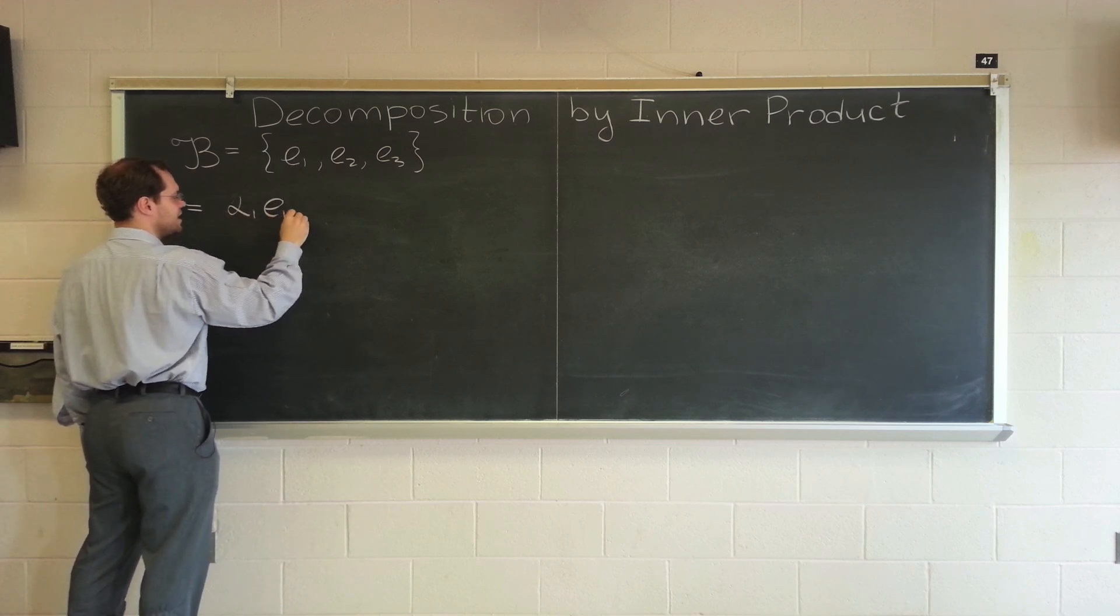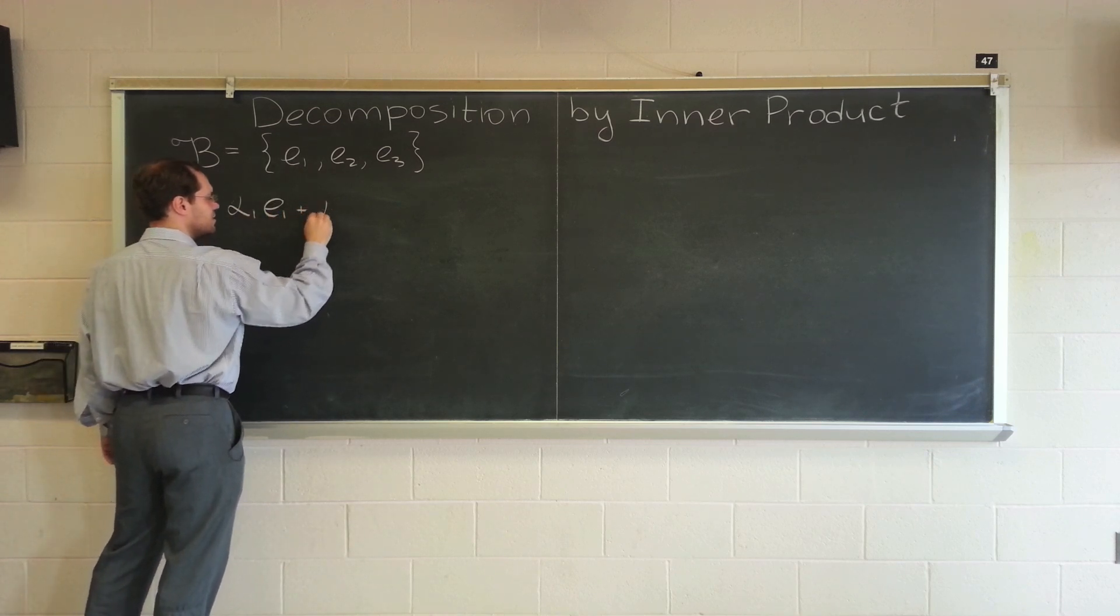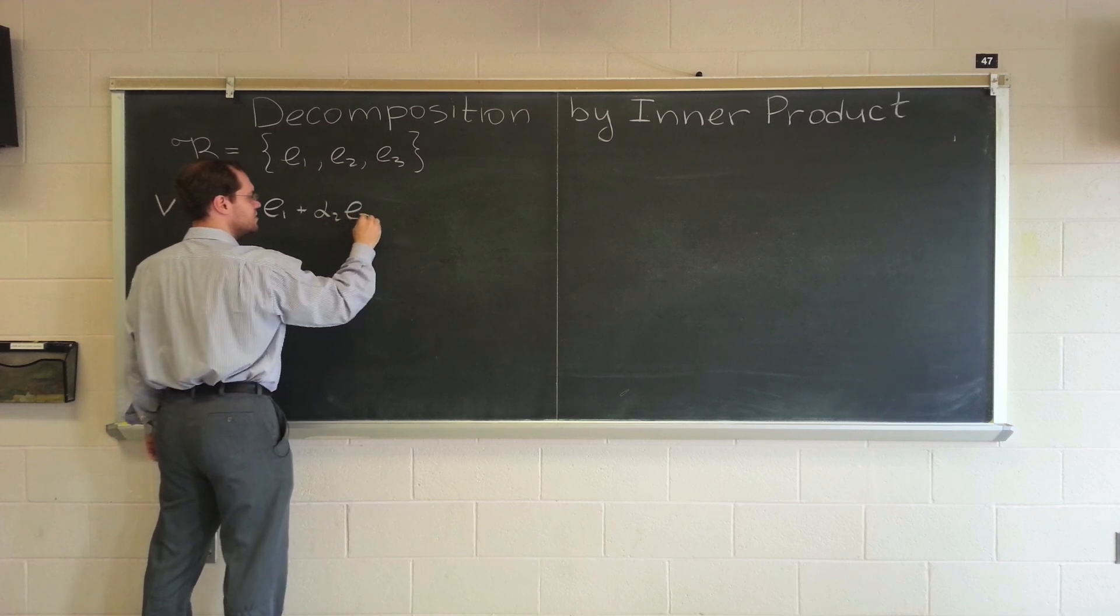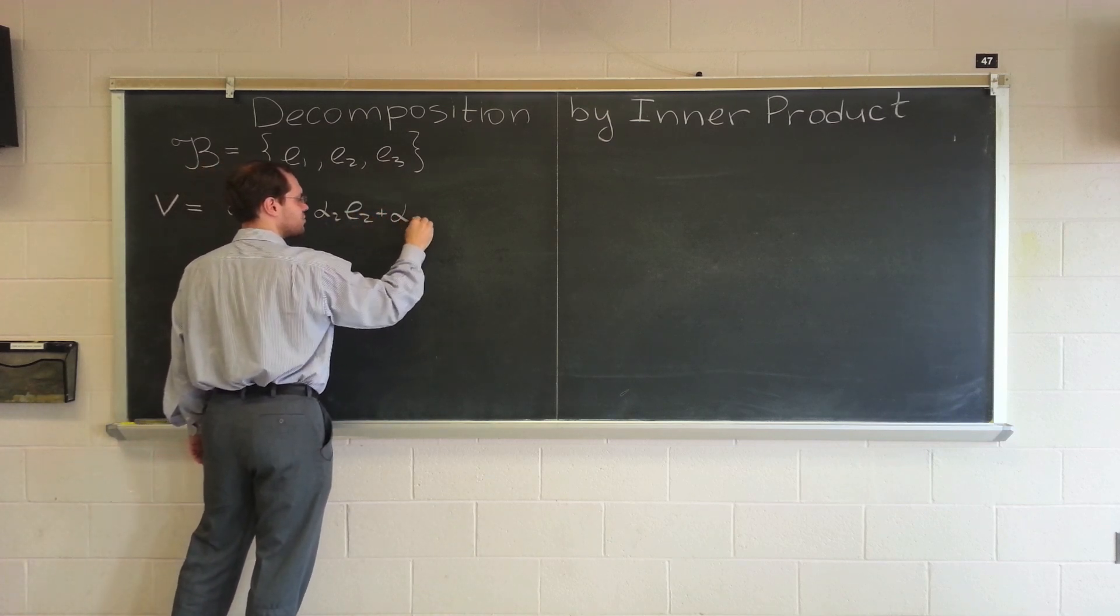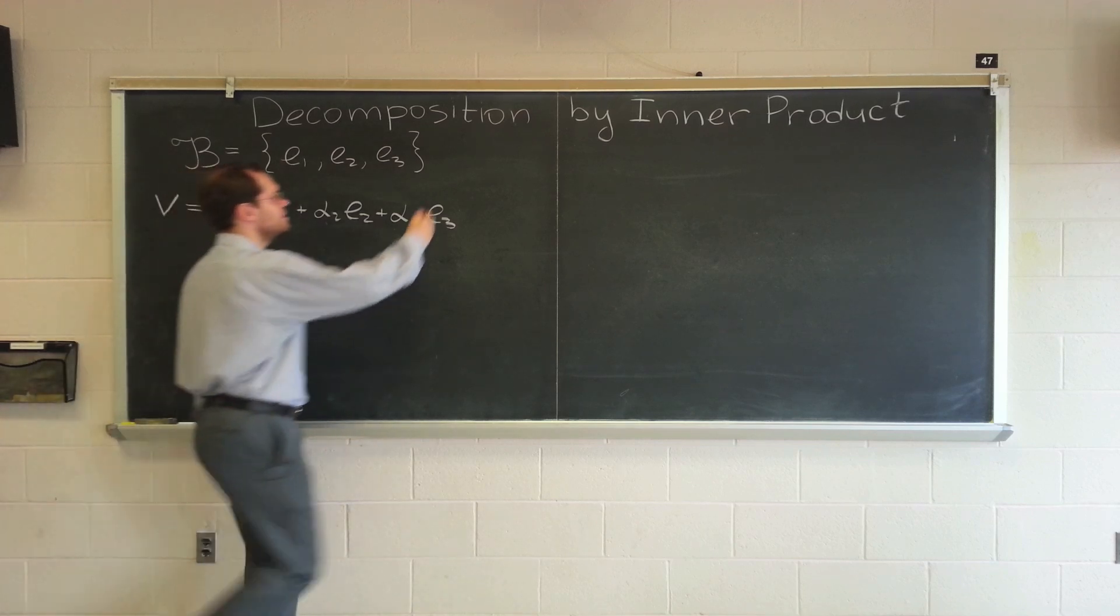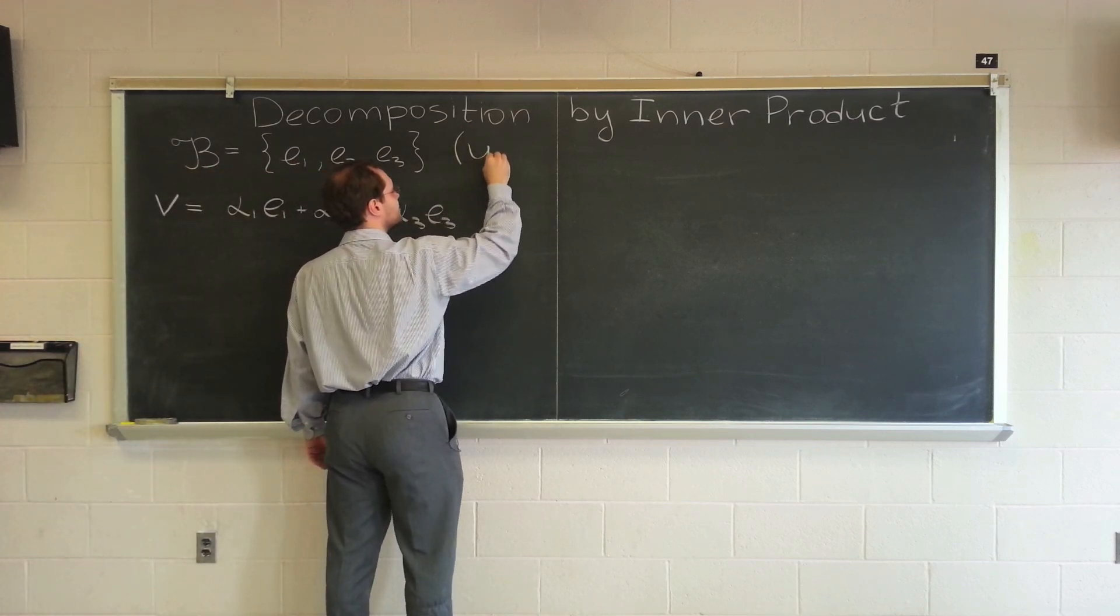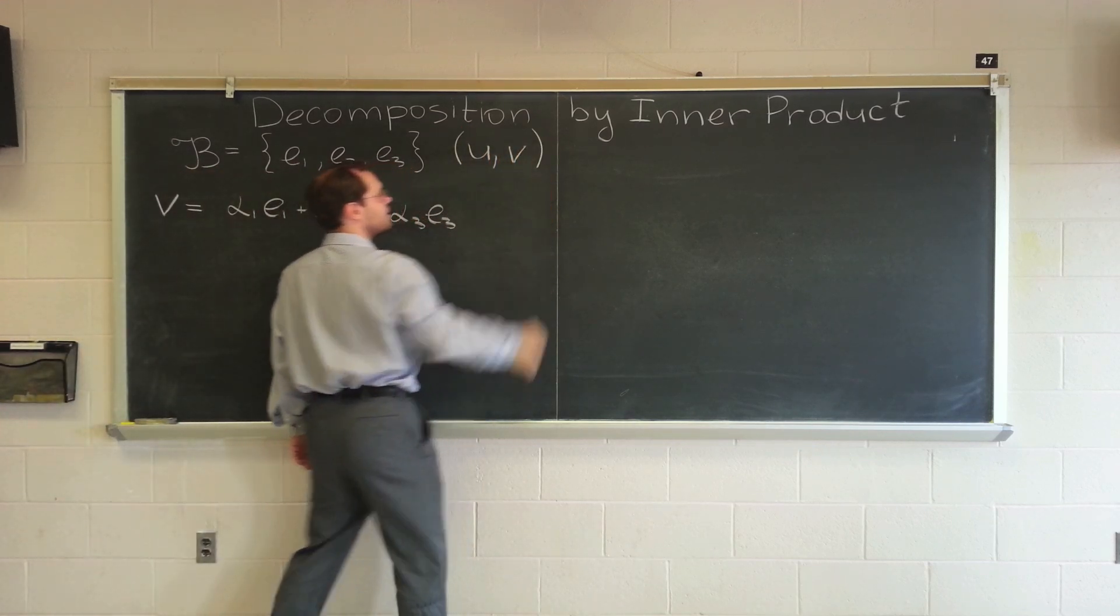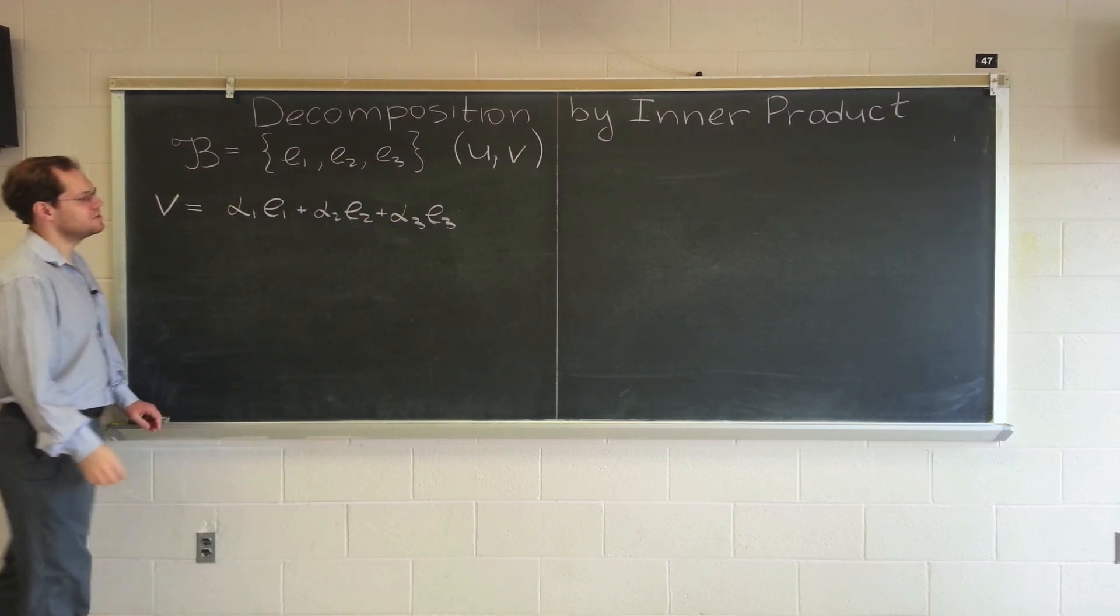If you have another vector v that's a linear combination of these basis vectors, in other words, has the decomposition alpha1 e1 plus alpha2 e2 plus alpha3 e3. And we will use this as our symbol for the inner product, this is the inner product between u and v.